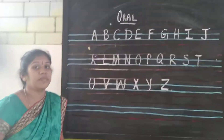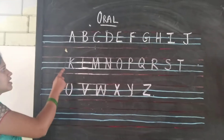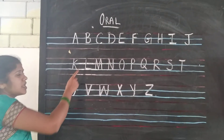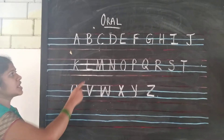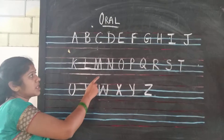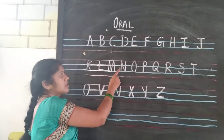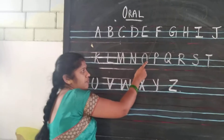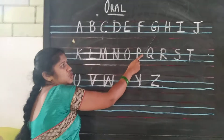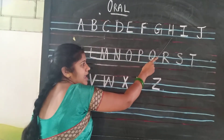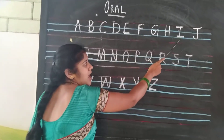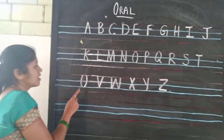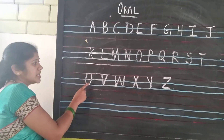Now you should repeat after me. We should break. Okay ma'am. A — A, B — B, C — C, D — D, E — E, F — F, G — G, H — H, I — I, J — J, K — K, L — L.